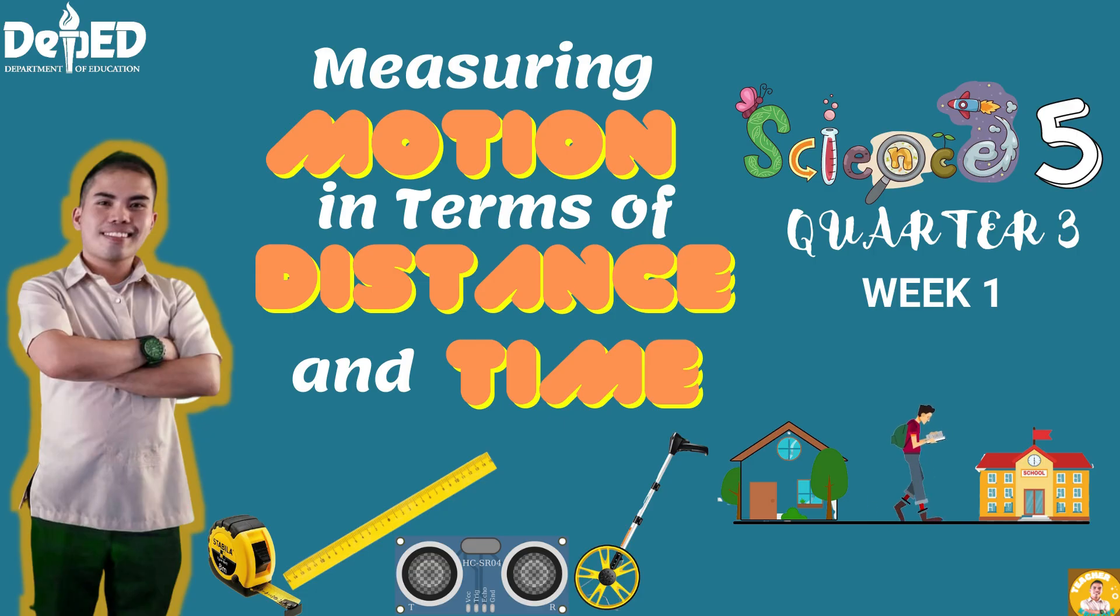In this lesson, you need to elucidate the meaning of motion of an object by tracing and measuring its change in position over a period of time, measure the movement of an object in terms of distance and time, and carry out the value of having a reference point when understanding motion.